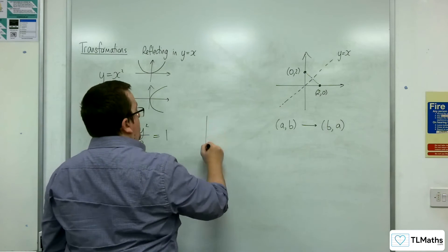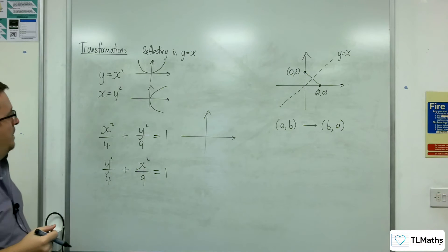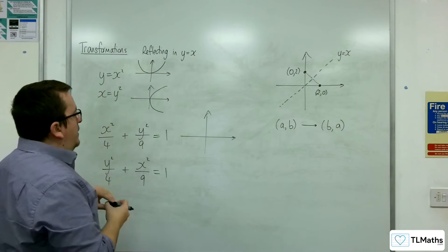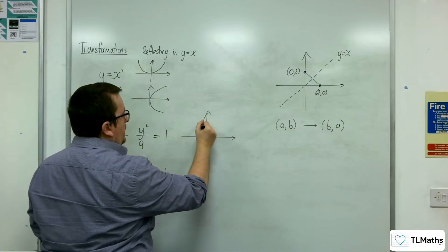So rather than having a curve that when x is 0 you're at 3 and minus 3, and then it's 2 and minus 2, it would look like this.